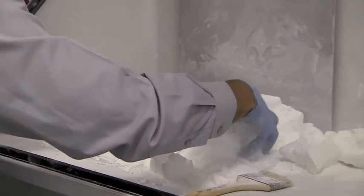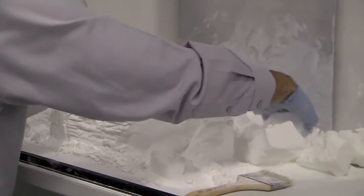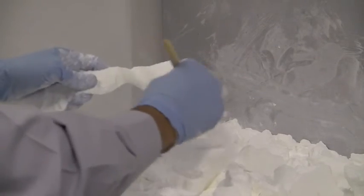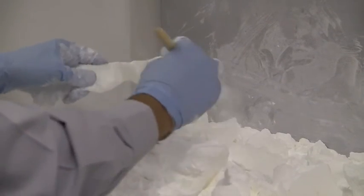Once the part is built, it's embedded inside a block of unmelted powder, which has to be removed. Specialists call this breaking out. For plastic components, the powder is loose and can be removed with a soft brush.